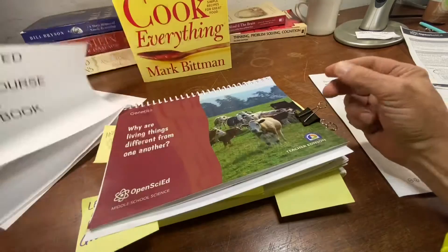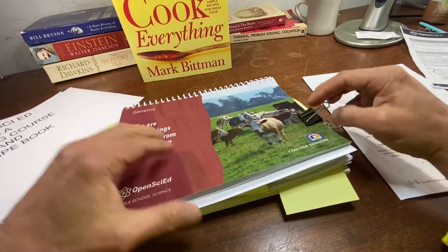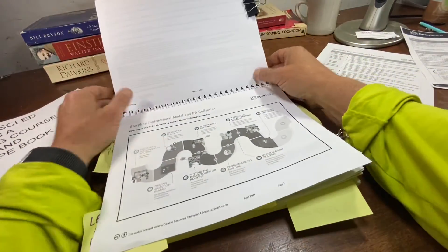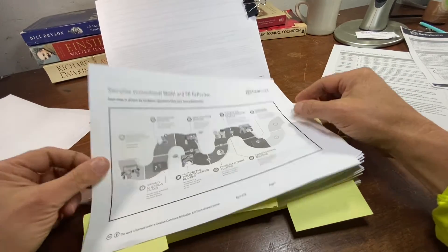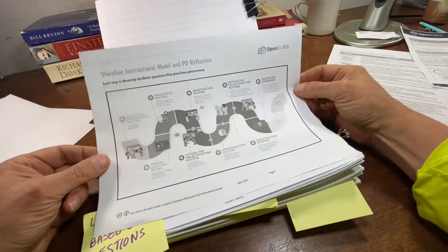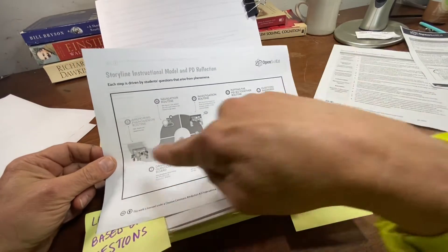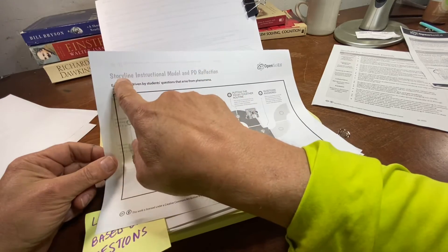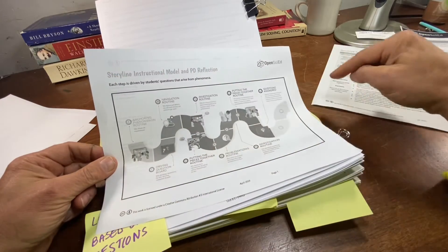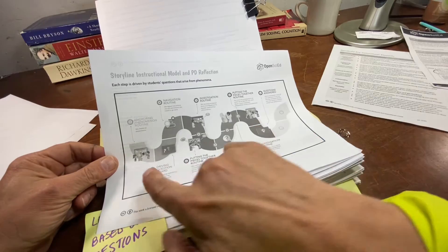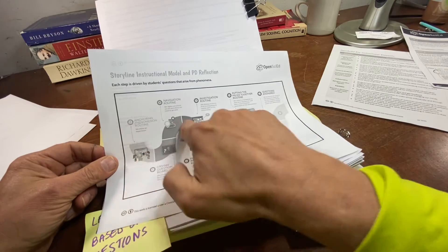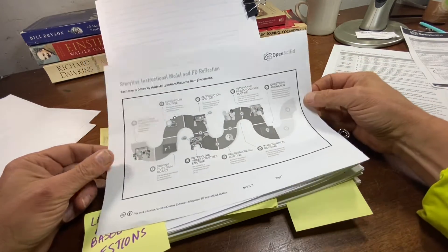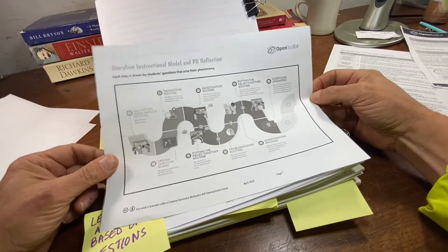And I think that's what OpenSciate is. I wanted to show you the organization of this rather impressive and a bit daunting book. You first should understand that it is organized via what's called a storyline instructional model — a series of steps driven by students' questions that arise from the phenomenon.